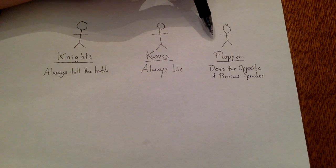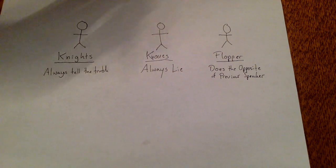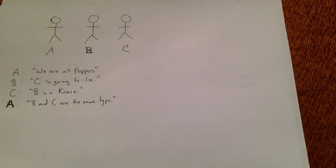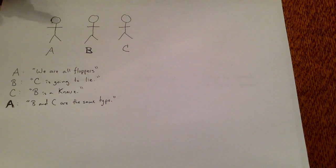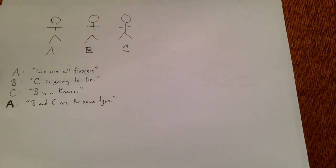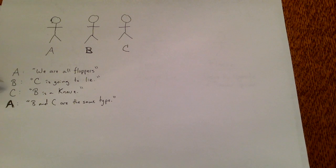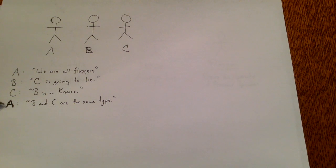You never know what a flopper is going to do if they're the first speaker. In this world, let's come across three people: A, B, and C. You can't tell if they are knights, knaves, or floppers, and you don't know how many of each type there are. Going through the following statements in order: A says "we are all floppers," B says "C is going to lie," C says "B is a knave," and then A says "B and C are the same type."